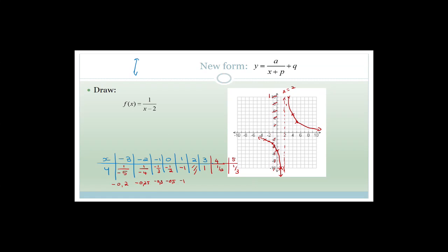What has happened is that this graph has been shifted over to the right. The x minus two has moved it over to the right.